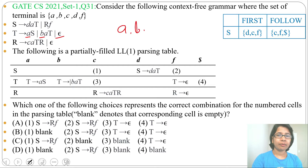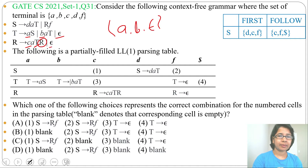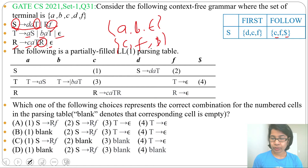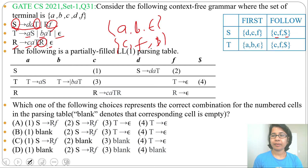Next, find FIRST of T: FIRST of T is {a, b, epsilon}. For FOLLOW of T, it includes FIRST of R which is c (epsilon excluded), plus FOLLOW of R which gives f, and from the production S → d a T, FOLLOW of T includes FOLLOW of S which is {c, f, $}. So FIRST of T = {a, b, epsilon} and FOLLOW of T = {c, f, $}.